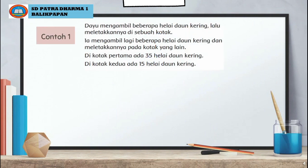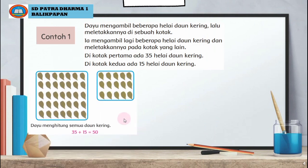Contoh yang pertama: Dayu mengambil beberapa helai daun kering, lalu meletakkannya di sebuah kotak. Ia mengambil lagi beberapa helai daun kering dan meletakkannya pada kotak yang lain. Di kotak pertama ada 35 helai daun kering, di kotak kedua ada 15 helai daun kering. Seperti ini ya anak-anak gambarnya.